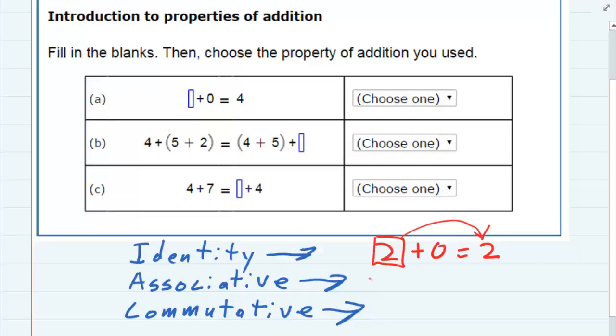Now the associative property says that if you have three things being added, it doesn't matter which order you do the addition. So one plus two plus three. If we were to associate the first two together here and get three plus three, that would be six.